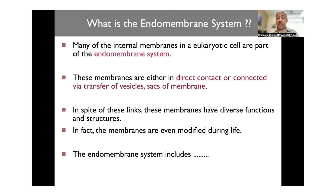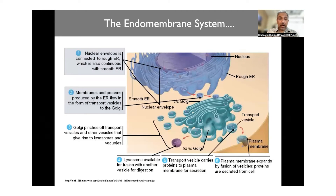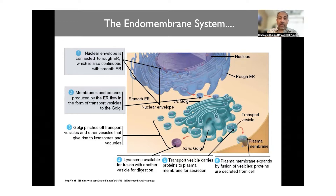In spite of these links, these membranes have diverse functions and structures, and in fact the membranes are even modified during life. The endomembrane system includes the nuclear envelope, which is immediately connected to the rough endoplasmic reticulum. The rough endoplasmic reticulum is the site where protein synthesis happens — it's called rough because it is lined by ribosomes that are making proteins.